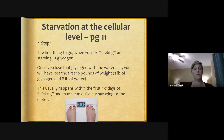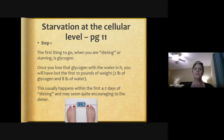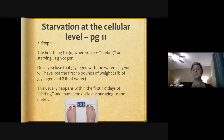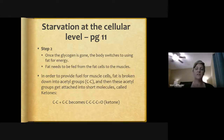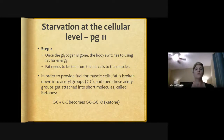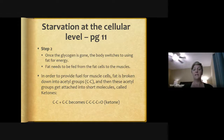Starvation at the cellular level: step one, the first thing to go when dieting or starving is glycogen. Once you lose the glycogen with the water in it, you will have lost your first 10 pounds — this typically happens within the first four to seven days of dieting. Step two, once glycogen is gone, the body switches to using fat for energy. Fat is fed from fat cells to the muscle; fat is broken down into acetyl groups, and these acetyl groups get attached into short molecules called ketones.